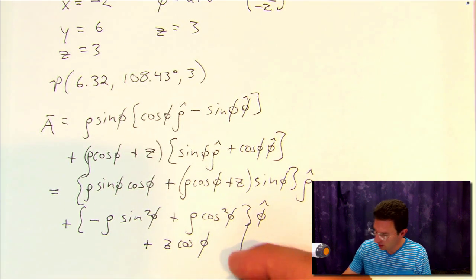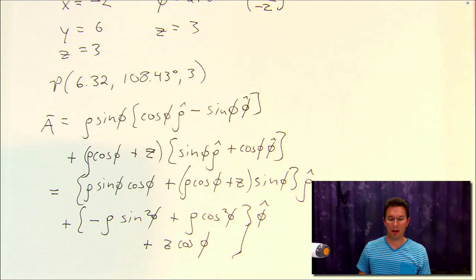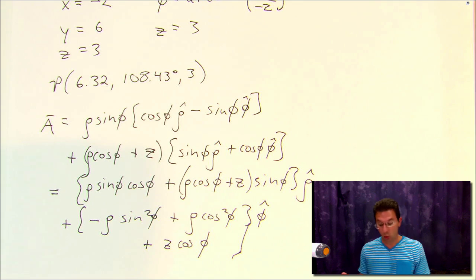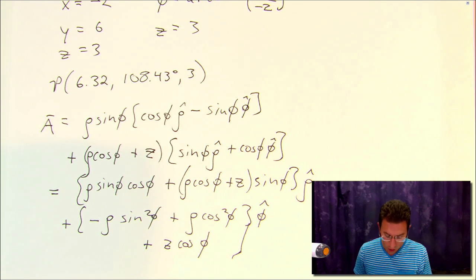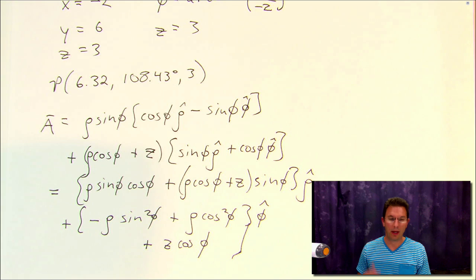And that all is multiplying the φ̂ direction. So that's how you do it. That's one approach to doing it. You can also convert these, as I said, using matrix vector products, but this is a way to do it via direct substitution.